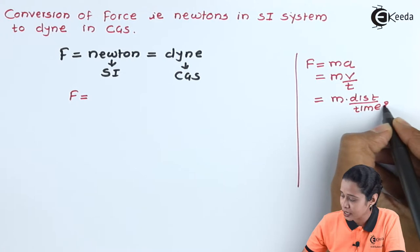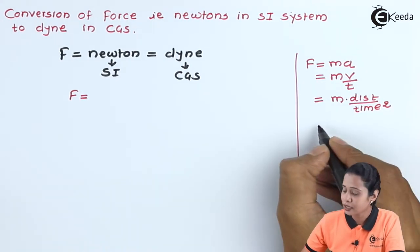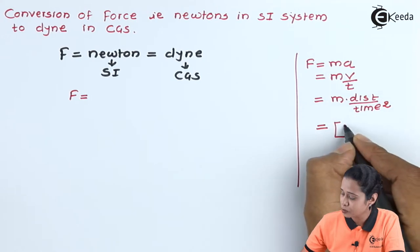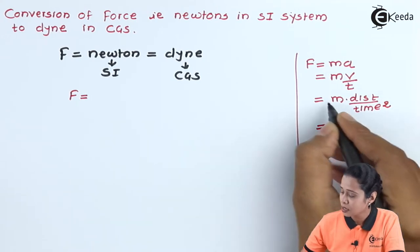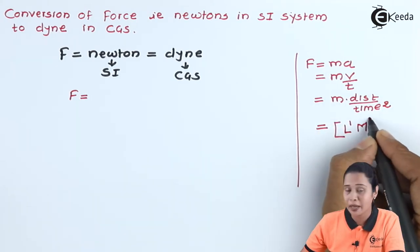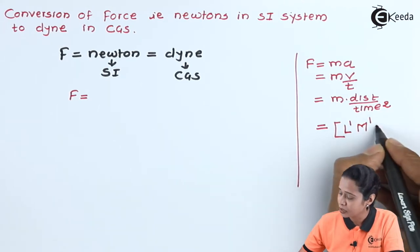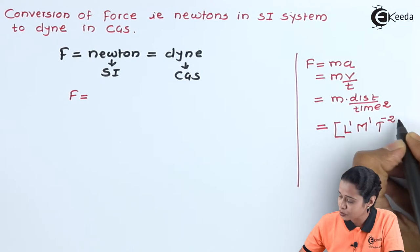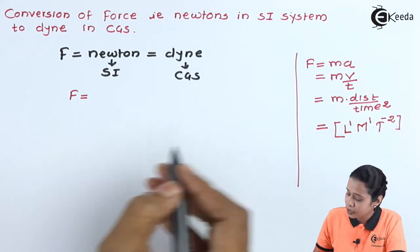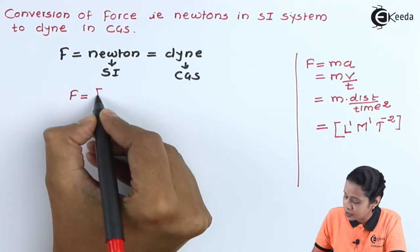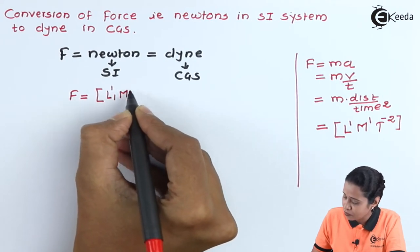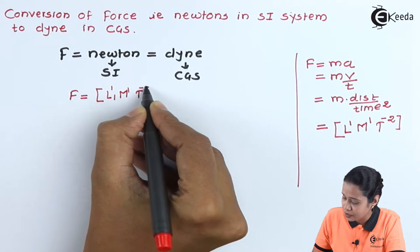This time is also there, so we will write here time square. What are the dimension of force here? Distance will express in terms of length L1, mass will be M1, and then time. Time is in denominator, so it will be minus T2. So here the dimension of force is L1, M1 and T minus 2.